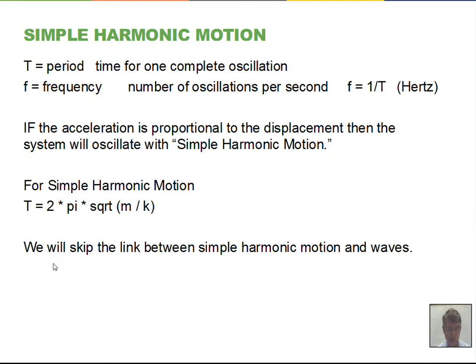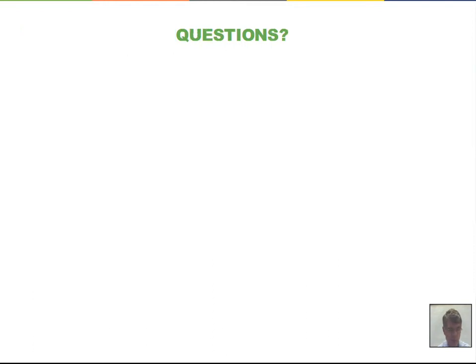There is a link between simple harmonic motion and waves, with displacement calculated using the cosine function, velocity using the sine function, and acceleration using the cosine function. I won't go over those in this video, but realize there is a strong connection between simple harmonic motion and waves, and the analysis of the two can be somewhat interchanged.